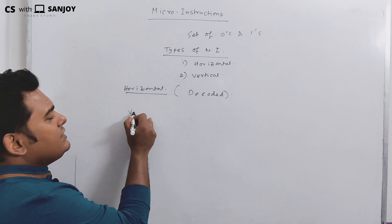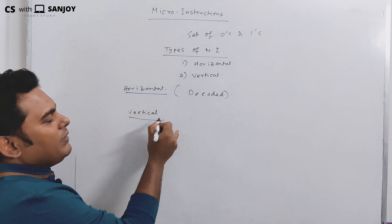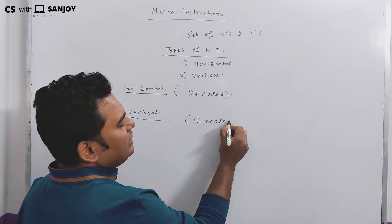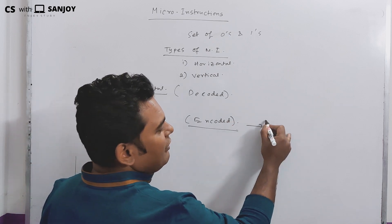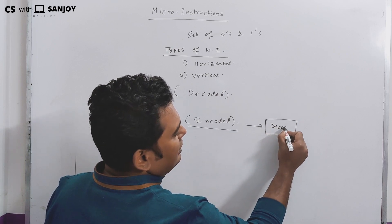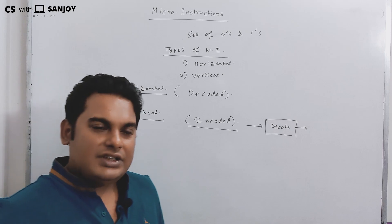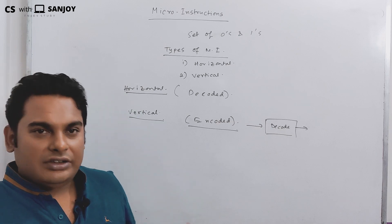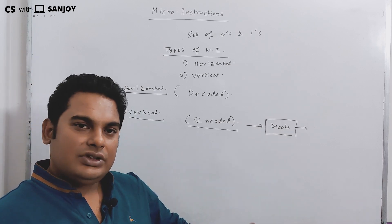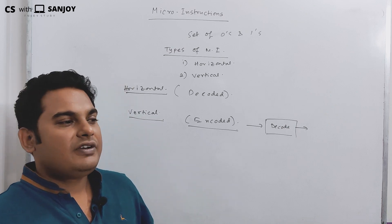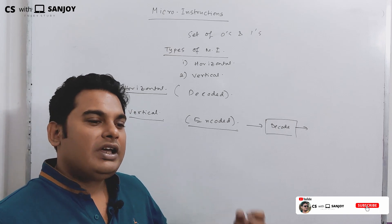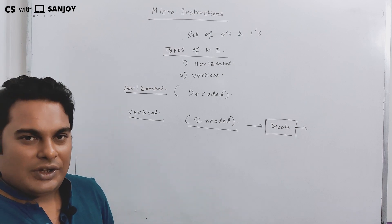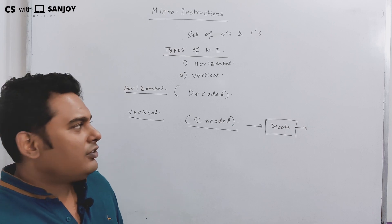Vertical micro-instruction, on the other hand, must be in encoded format. The vertical micro-instruction is in encoded format. Before we can use it, it needs to be decoded in order to access the effective instructions and effective address.